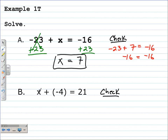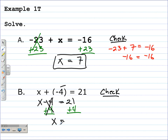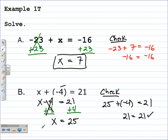Moving on to example 1B. We have x plus negative 4 is equal to 21 — we could rewrite this as x minus 4 is equal to 21; either way, it's the same equivalent equation. Since we are subtracting 4, or have a negative 4, we add 4 to both sides. The 4s are opposites and cancel, leaving x isolated. 21 plus 4 is 25. We check by substituting: 25 plus negative 4 is supposed to equal 21, and it does — 21 equals 21.